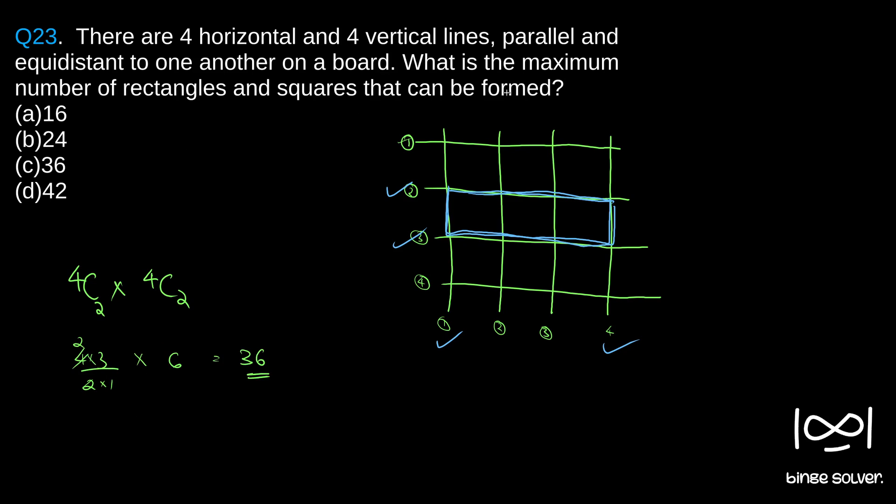The total number of rectangles and squares is 36. So the solution to question 23 is C, 36. If you're not familiar with combinations and permutations or the nCr formula for combinations, I will soon upload a video.